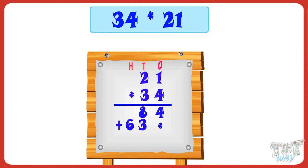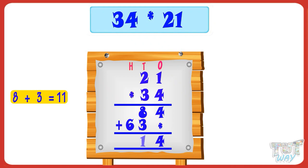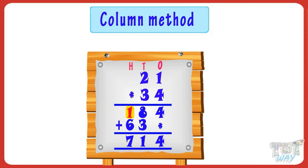Now add the products. 4 plus 0 equals 4. 8 plus 3 equals 11. Carry over 1 to the next place. 6 plus 1 carry equals 7. 714 is our product of 21 and 34. This is called the column method of multiplication.